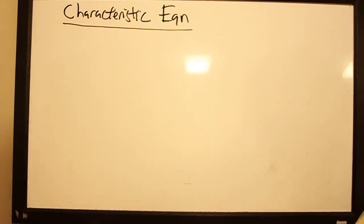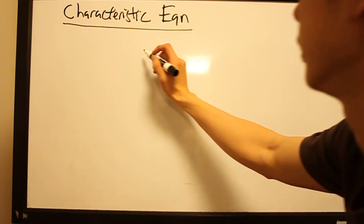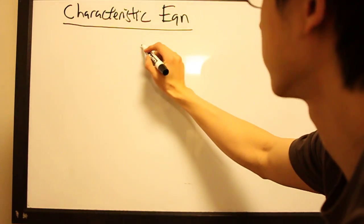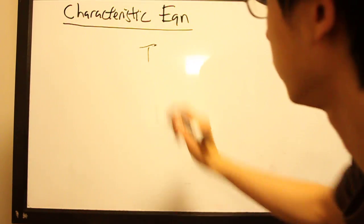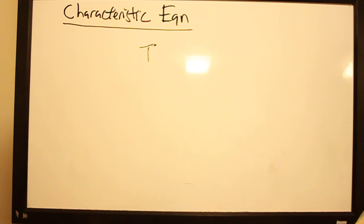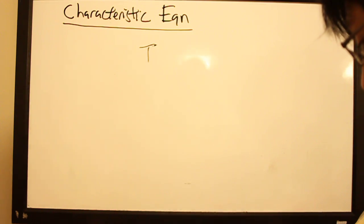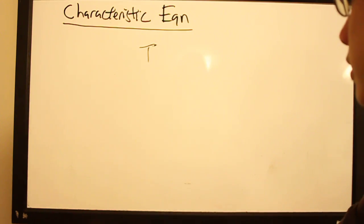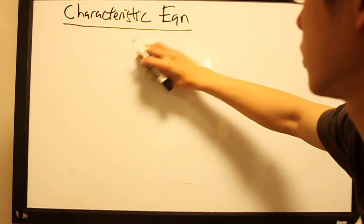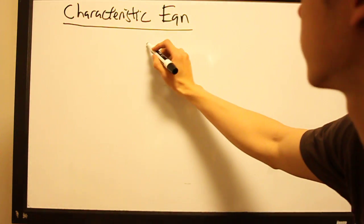Now that we know what eigenvectors and eigenvalues are, the natural question to ask is: given a linear transformation t, how do I find its eigenvalues lambda and its eigenvectors? The answer is to look at the definition of eigenvectors.